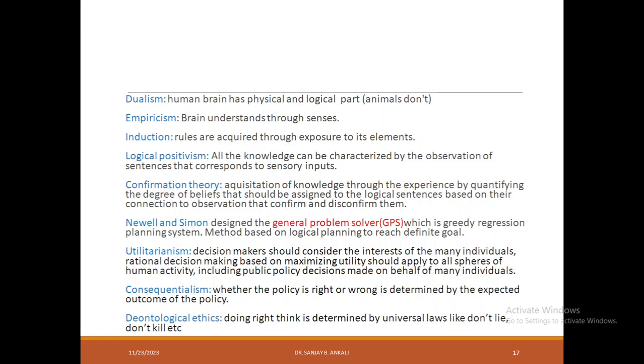The last term is deontological ethics. It says that human brain will obey universal laws to check and acts upon that. For example, universal laws like don't lie, don't kill. Human brain deals with deontological ethics implicitly.